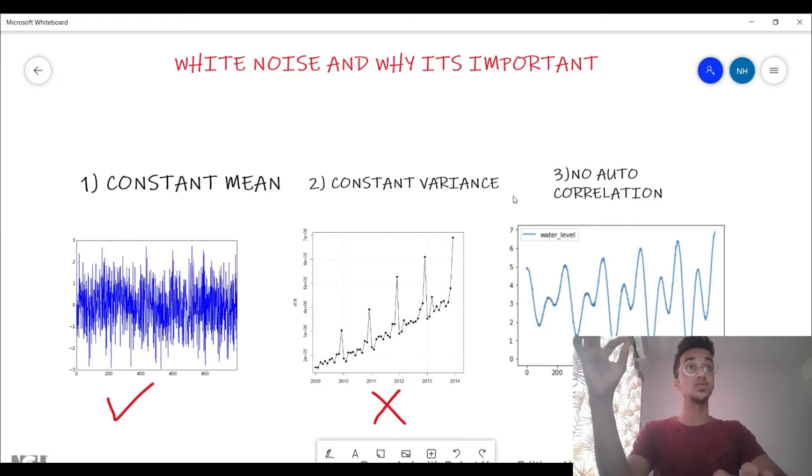The third characteristic, which is one of the most important in any white noise, is that there is no autocorrelation. What does that mean? That means the value of the time series at a particular period has no relation with the values in past time periods, and the moment you understand this, you realize why it's impossible to make predictions for white noise because there is no pattern in your time series data. If there is no pattern, if there is no relation of past and present values, then there is no way that you can make predictions in the future because it's completely random. So these three characteristics make up white noise.